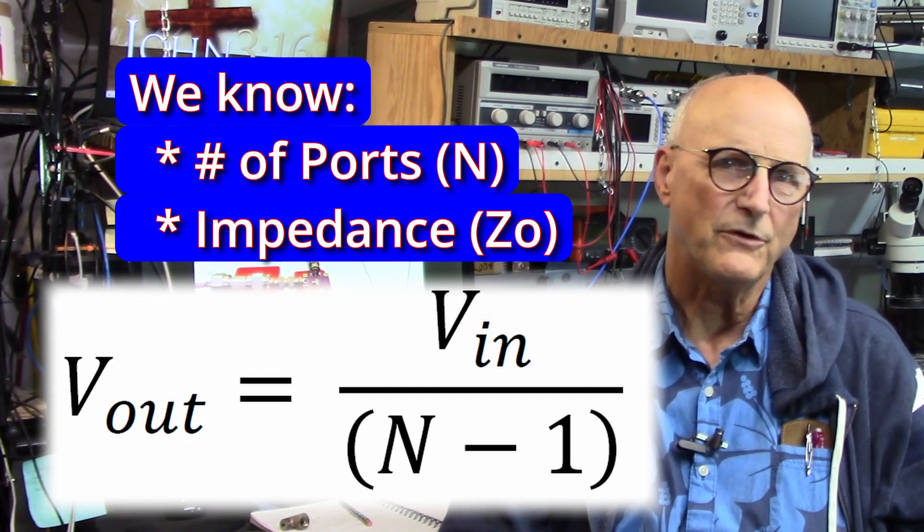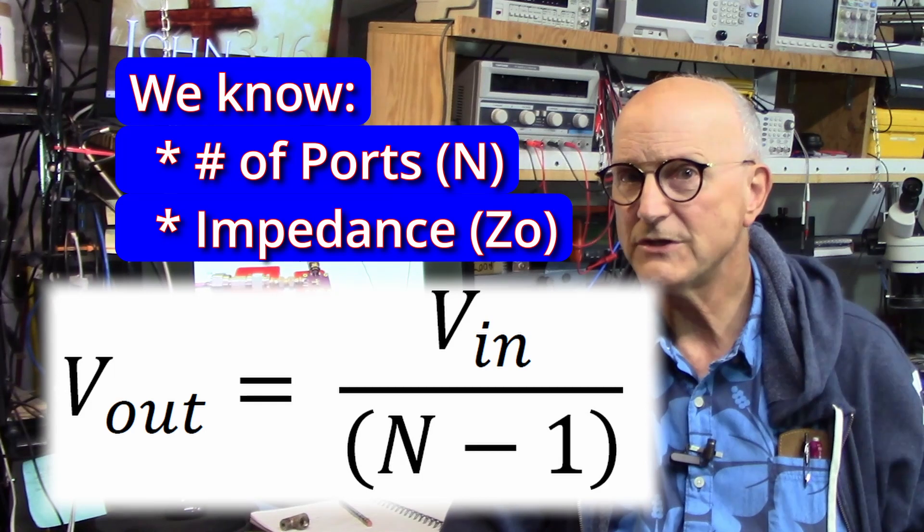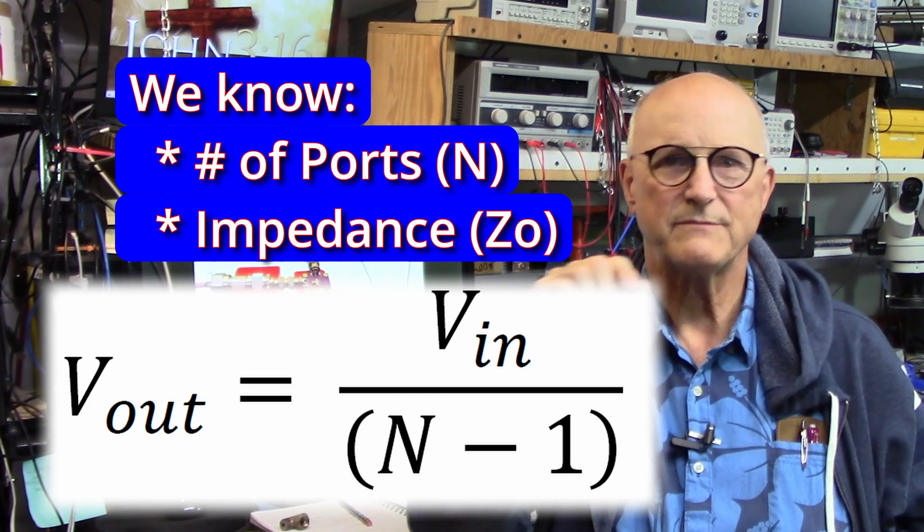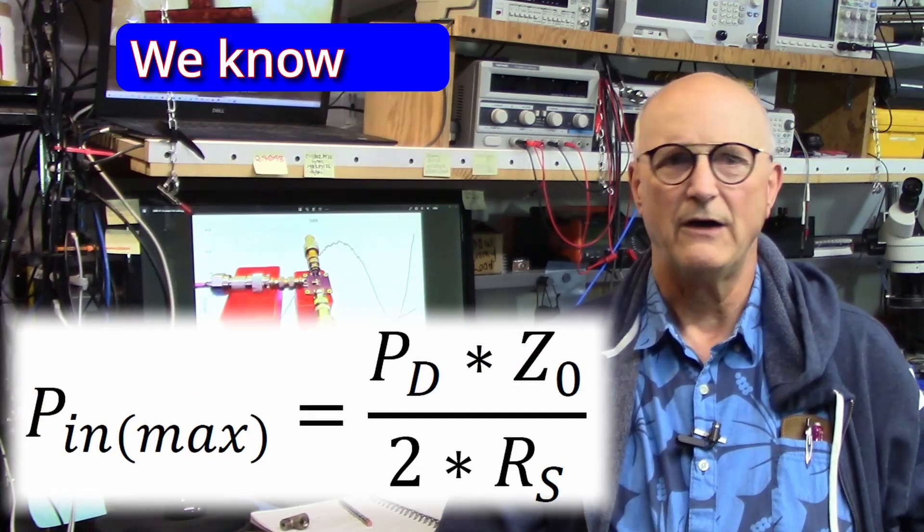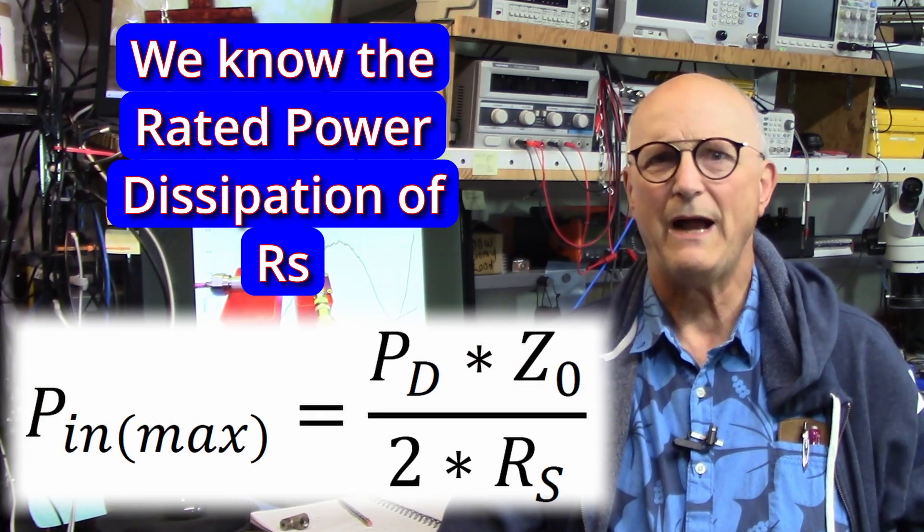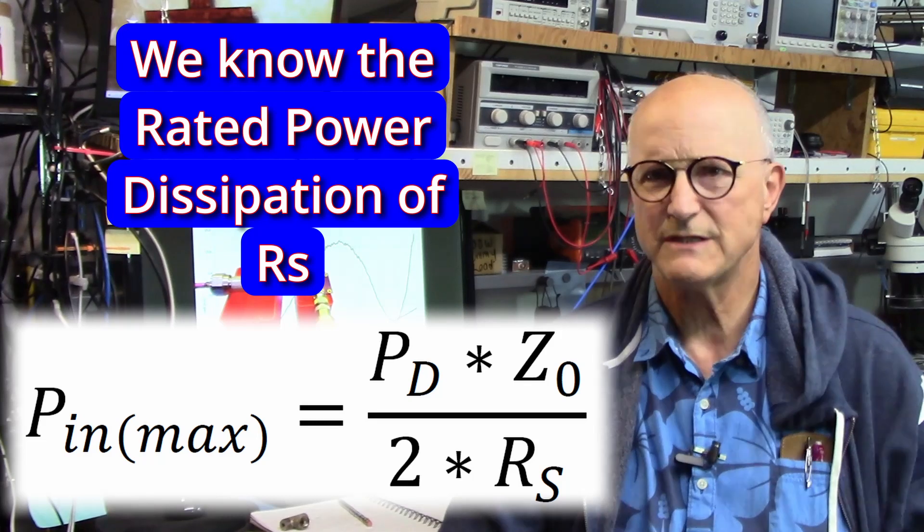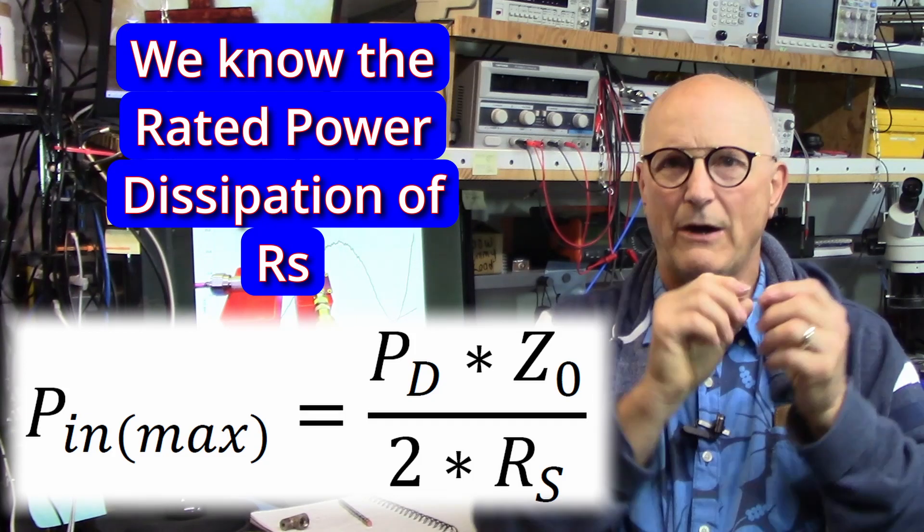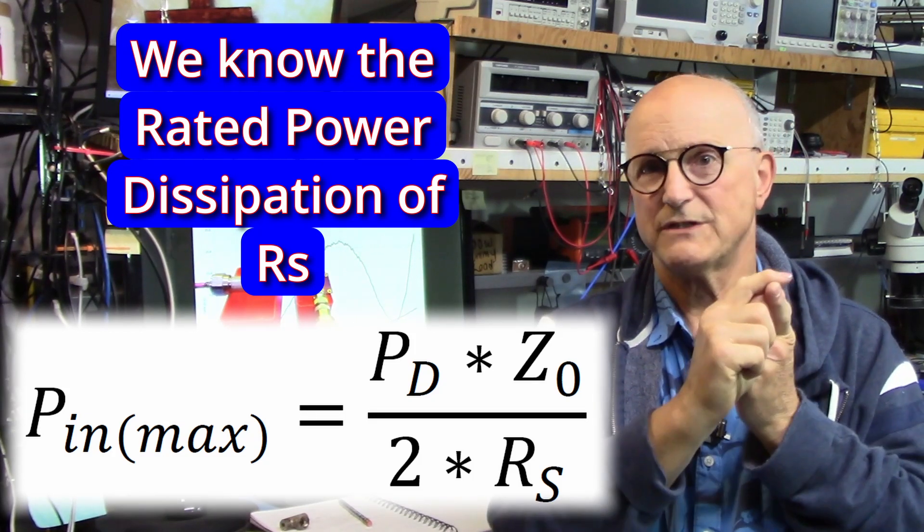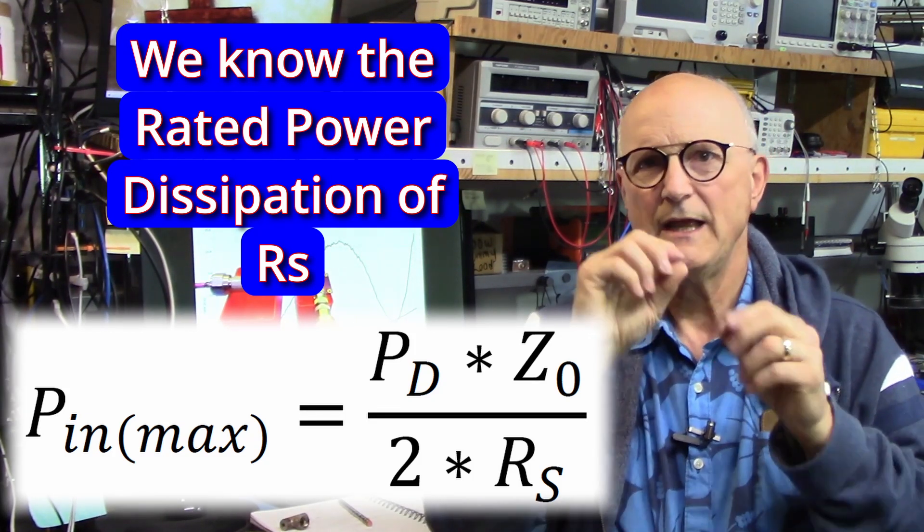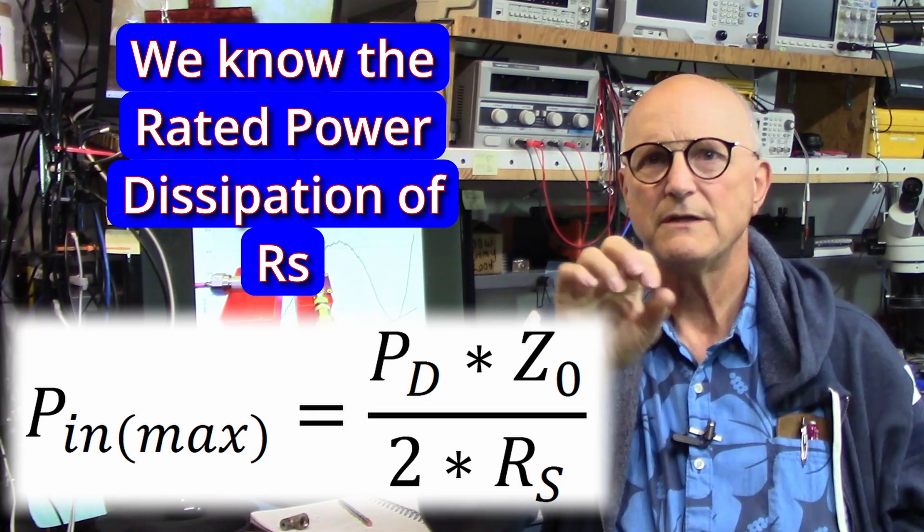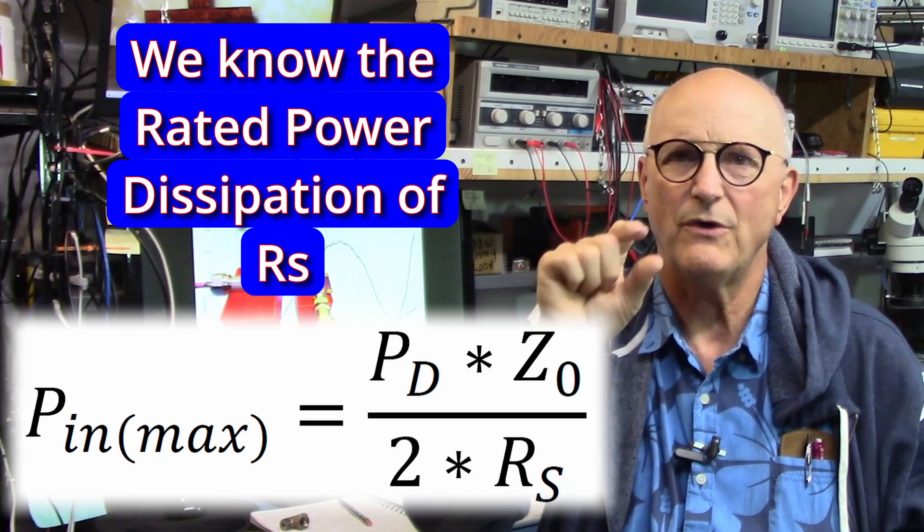And the output voltage given a known input voltage is equal to the voltage in times 1 divided by the number of ports minus 1. Now, if we also know the rated power dissipation of the series resistor, then the maximum power input to the splitter will be equal to the power dissipation of the resistor times the characteristic impedance of the system, all divided by 2 times the value of the series resistor.